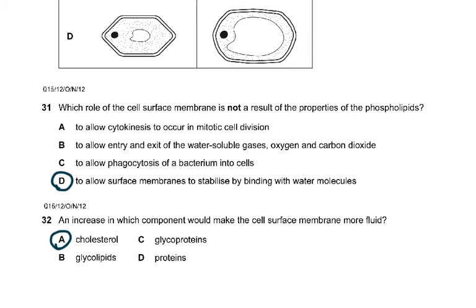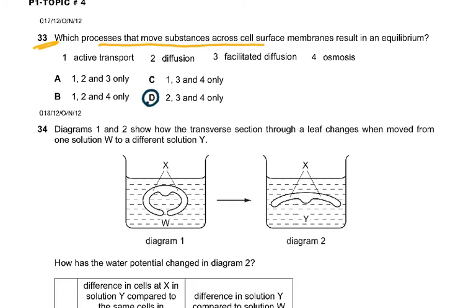Question 31. Which role of the cell membrane is not a result of the properties of the phospholipids? To stabilize surface membranes by binding with water molecules. Then an increase in which component would make the cell surface more fluid? Cholesterol, or it could have been unsaturated fatty acids. Question 33. Which processes that move substances across cell membranes result in an equilibrium? It had to be the three passive processes: diffusion, facilitated diffusion, and osmosis.